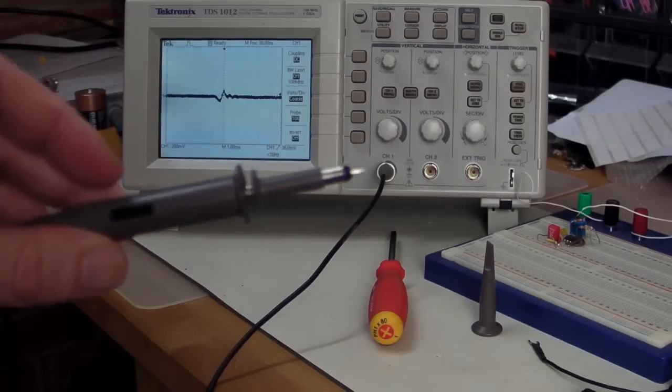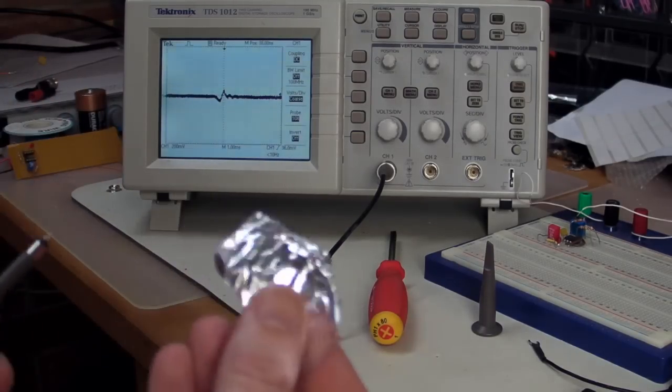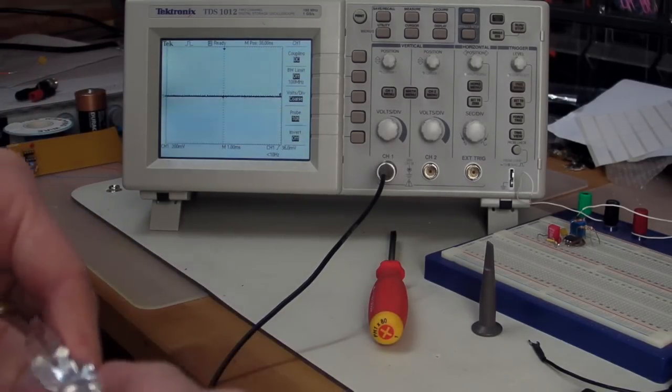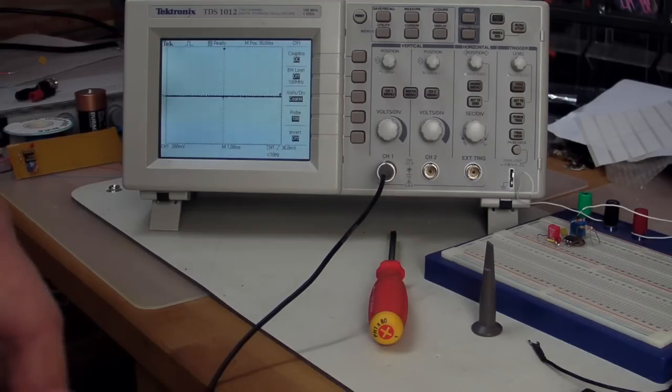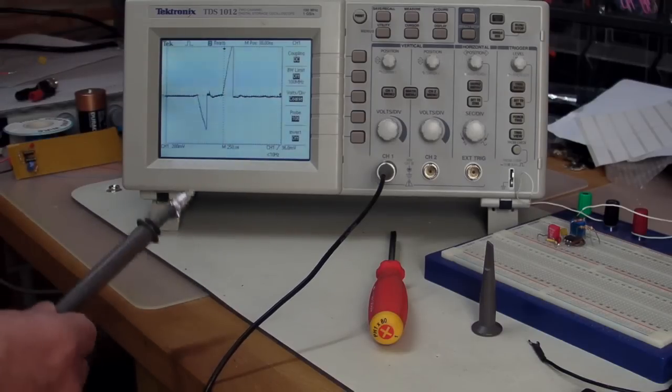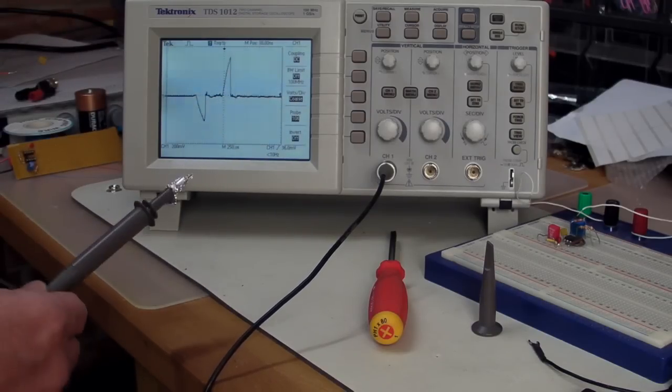Neat. You're wondering what happens when we short out the probe. Well, I've got some alfoil here, as we call it in Australia. You guys might call it something different. As you can see, the really sharp drops on this waveform, it is remarkably different.